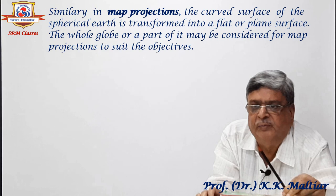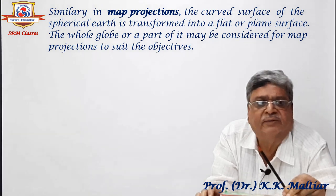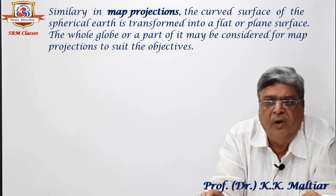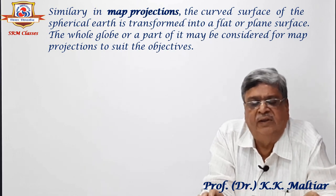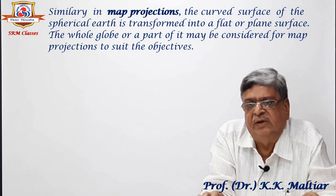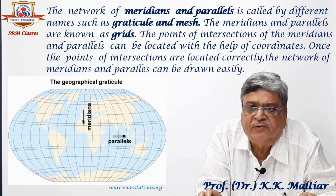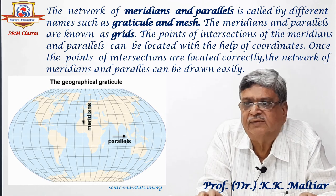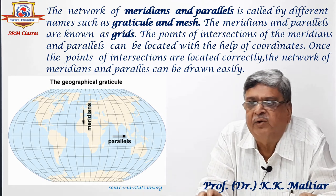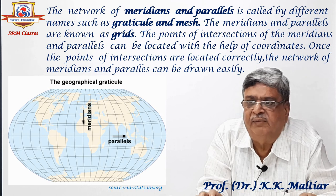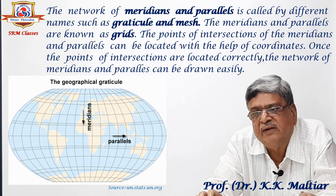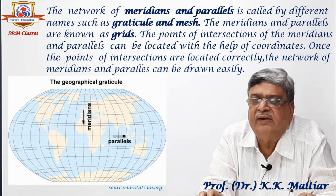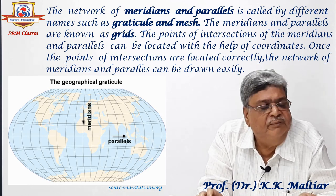Similarly, in map projection, the curved surface of the spherical earth is transformed into a flat or plane surface. The whole globe or a part of it may be considered for map projections to suit the objectives. The network of meridians and parallels is called by different names such as graticule and mesh. The meridians and parallels are known as grids, and the points of intersection can be located with the help of coordinates. Once the points of intersections are located correctly, the network of meridians and parallels can be drawn easily.